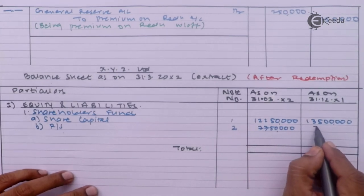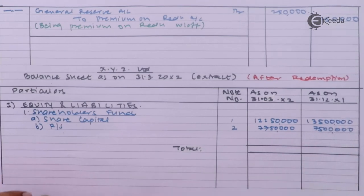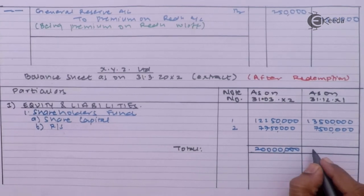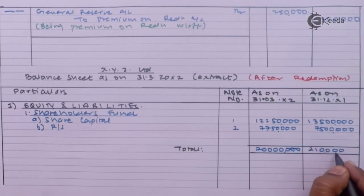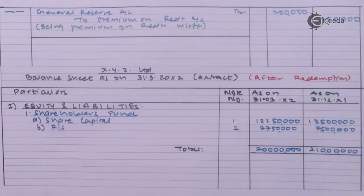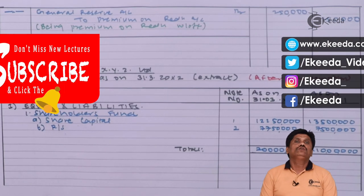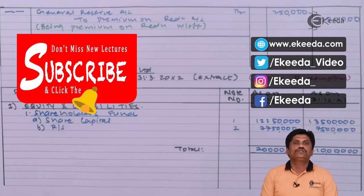Taking the total of available figures: Rs 2 crore 10 lakhs — that is the total. In this way I have completed this question. The question was lengthy and involved calculations, but it is not difficult. If you have any difficulty, please put your question in the comment box and we will be happy to solve your queries. Thank you for watching this video, keep watching, keep sharing, God bless you all.